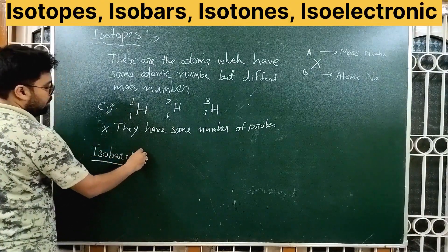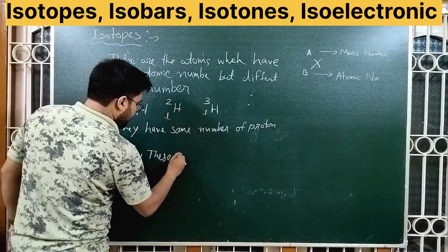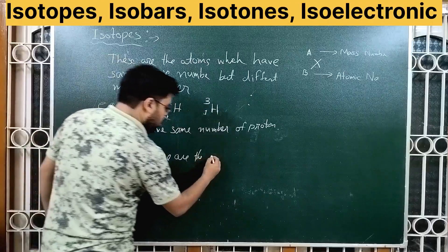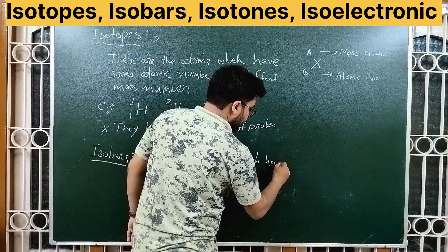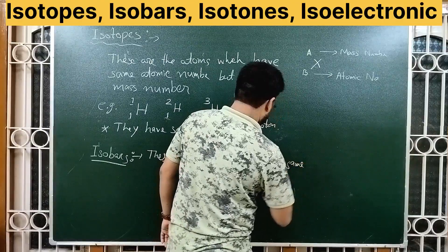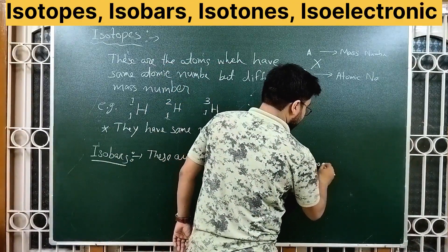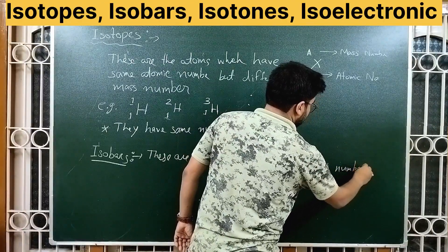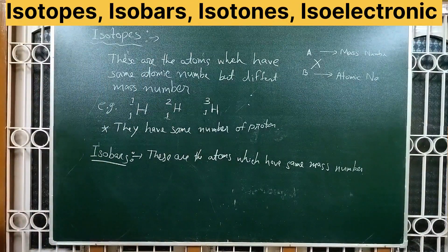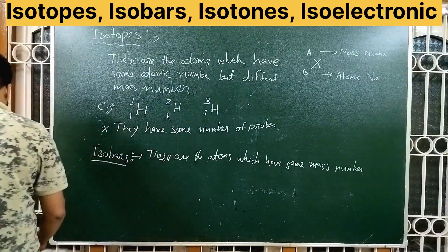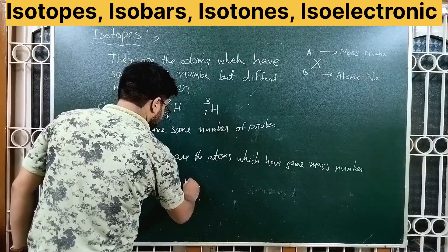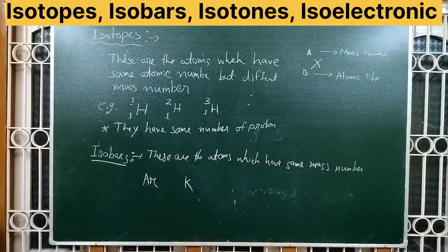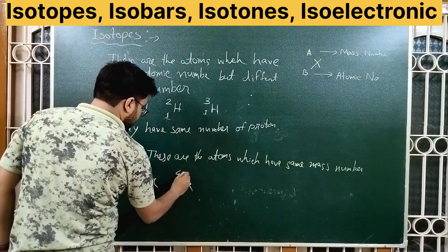Next, isobars. These are the atoms which possess the same mass number but different atomic numbers. An example is argon and potassium. What is the mass number? It is 40 for both — argon-40 and potassium-40.